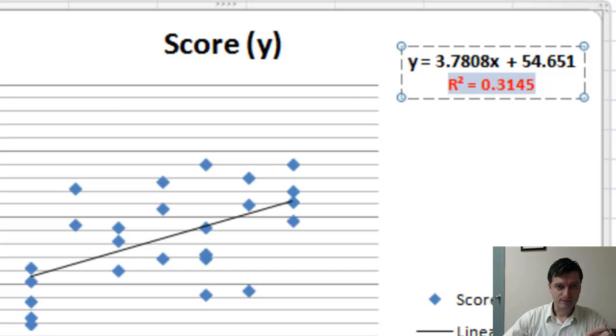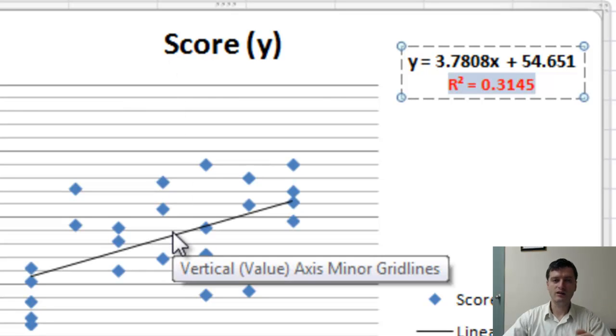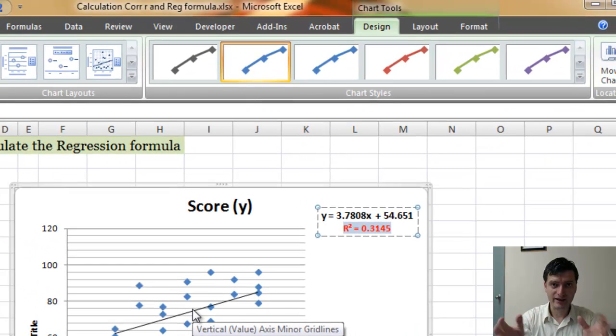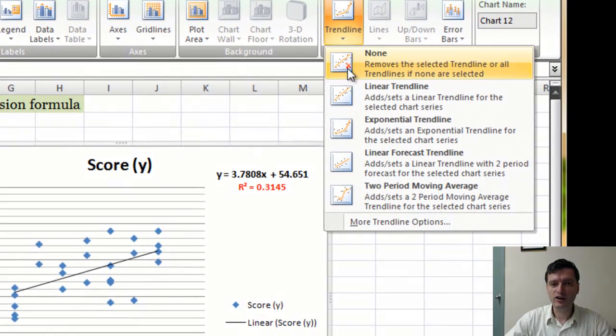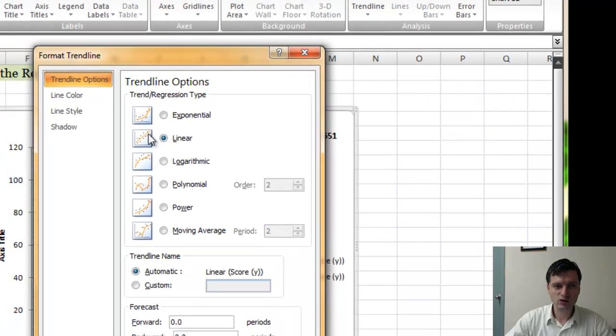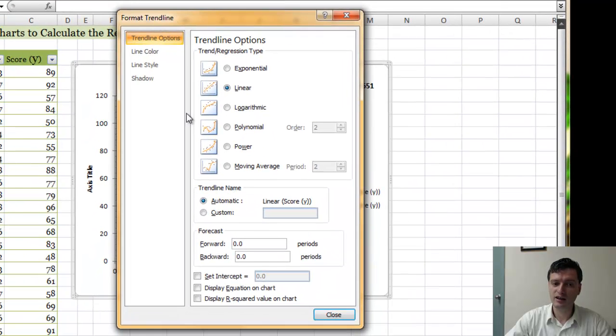The second way, if you do not want to use the design tab and the chart layout, to do the regression line and the regression equation, you have to go to the layout tab in the contextual tabs, in the trend line, click on it, and then go all the way down to the more trend line options. This will open up the format trend line dialog box.